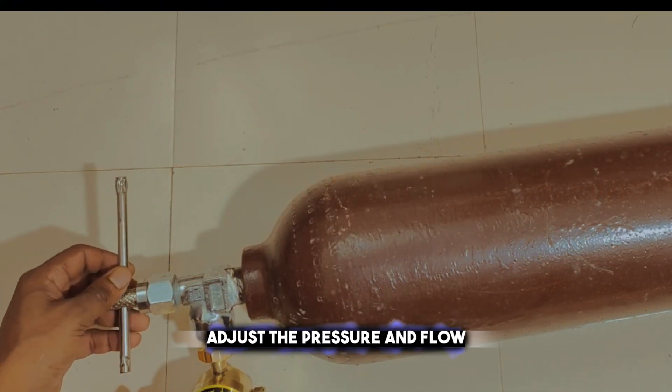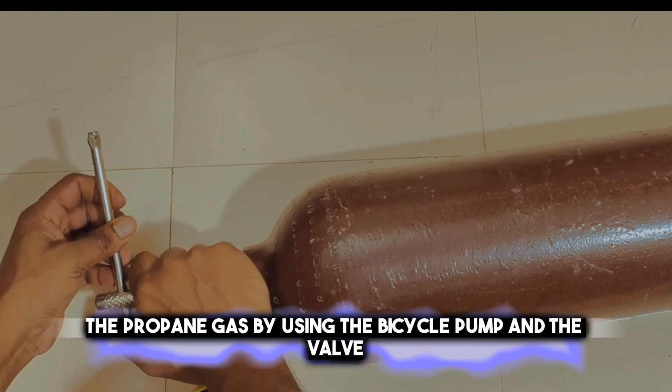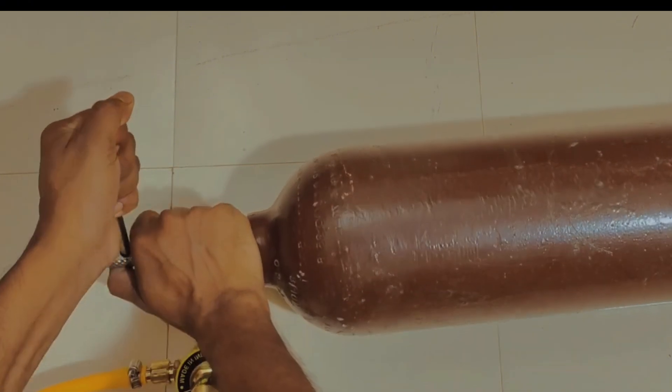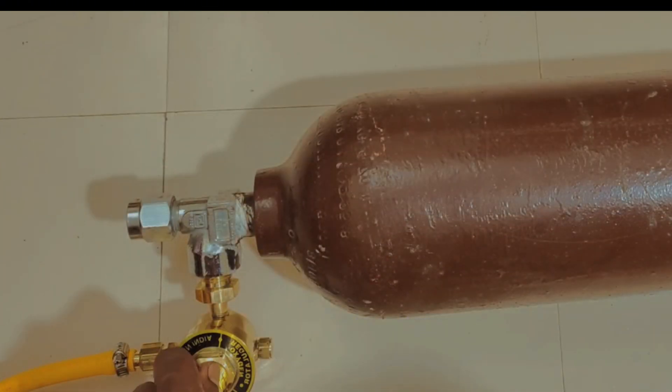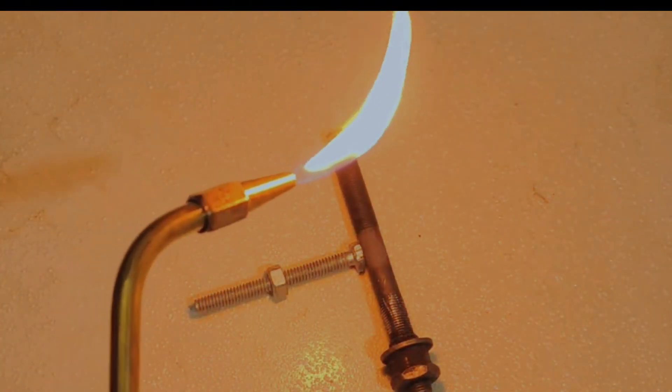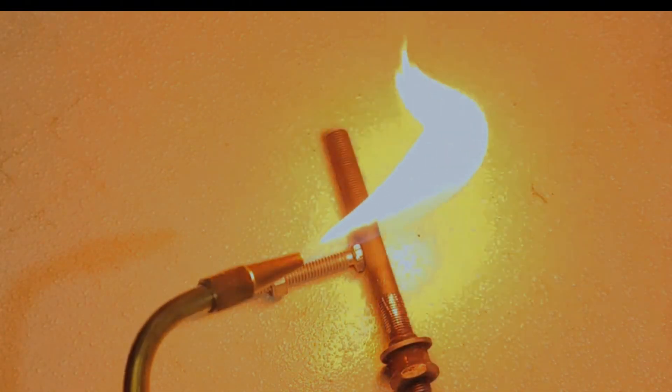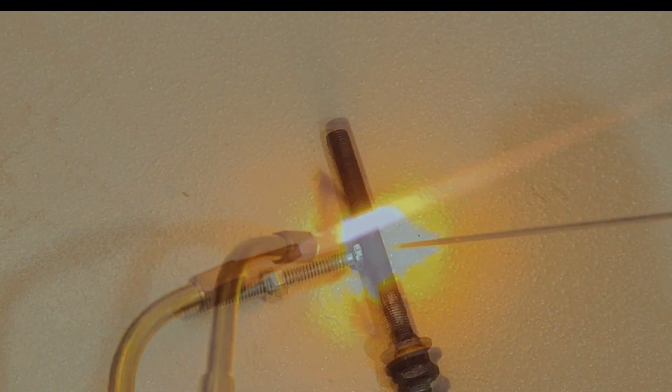Adjust the pressure and flow of the propane gas by using the bicycle pump and the valve, making the flame suitable for different welding applications. Use the gas welding machine for welding various types of metals, such as steel, copper, or brass, and create different shapes and designs.